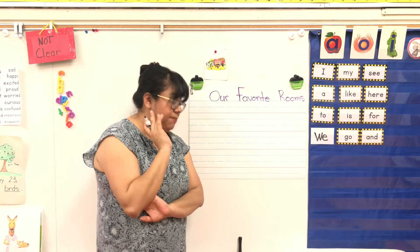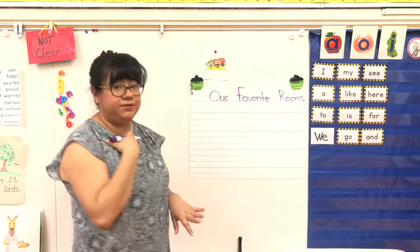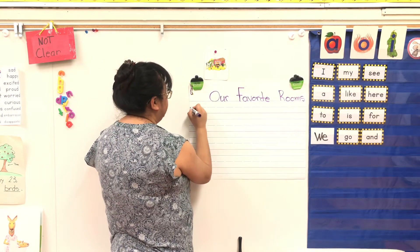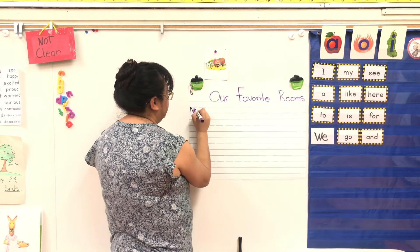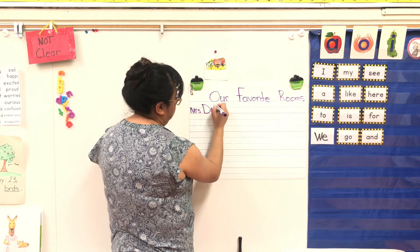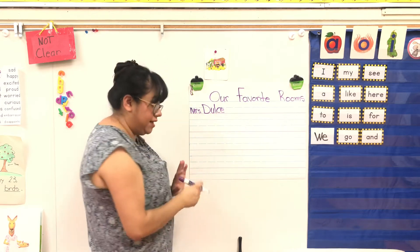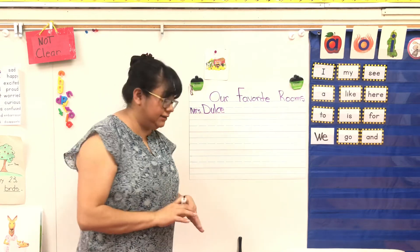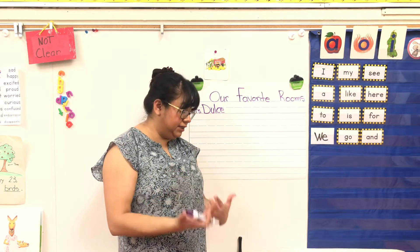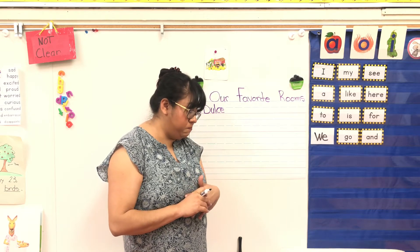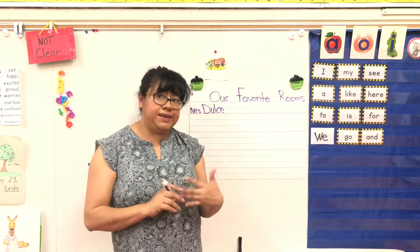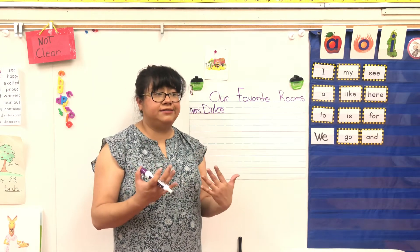I'm going to write my name because I'm the one saying the sentence — it's my idea. So I'm going to put my name. And then I'm going to go ahead and write my sentence. I know that my favorite room in my house is the kitchen. Miss Dulce likes the kitchen.